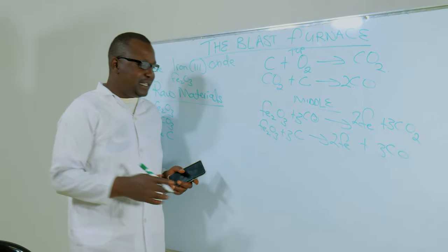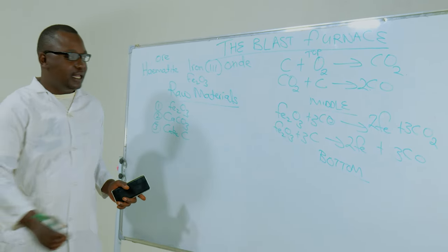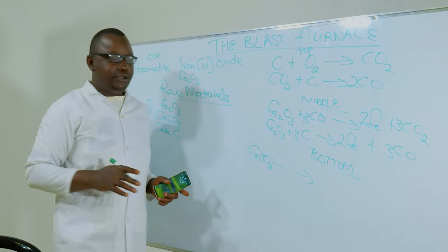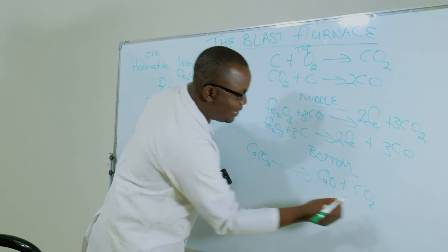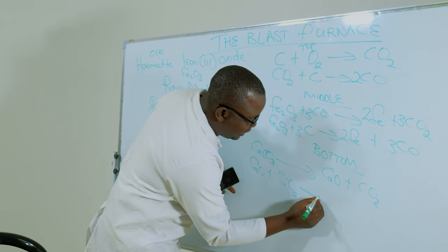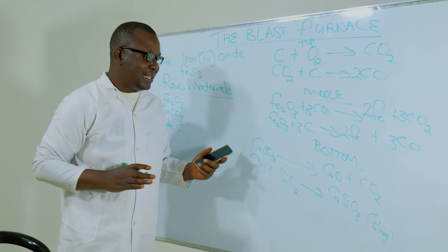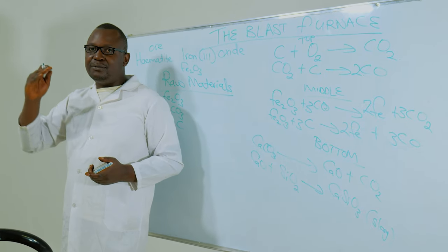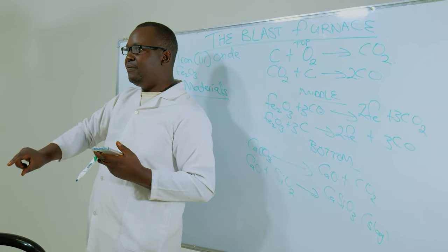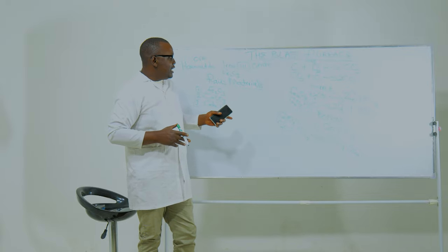At the bottom of the blast furnace, we have the thermal decomposition of limestone. Calcium carbonate decomposes due to the high temperatures within the blast furnace to produce calcium oxide plus carbon dioxide. Calcium oxide then reacts with silica impurities to produce calcium silicate, known as slag. Slag is less dense than molten iron, so it sits at the top, while molten iron is denser and settles at the bottom, where it is removed. This iron is known as pig iron or cast iron.